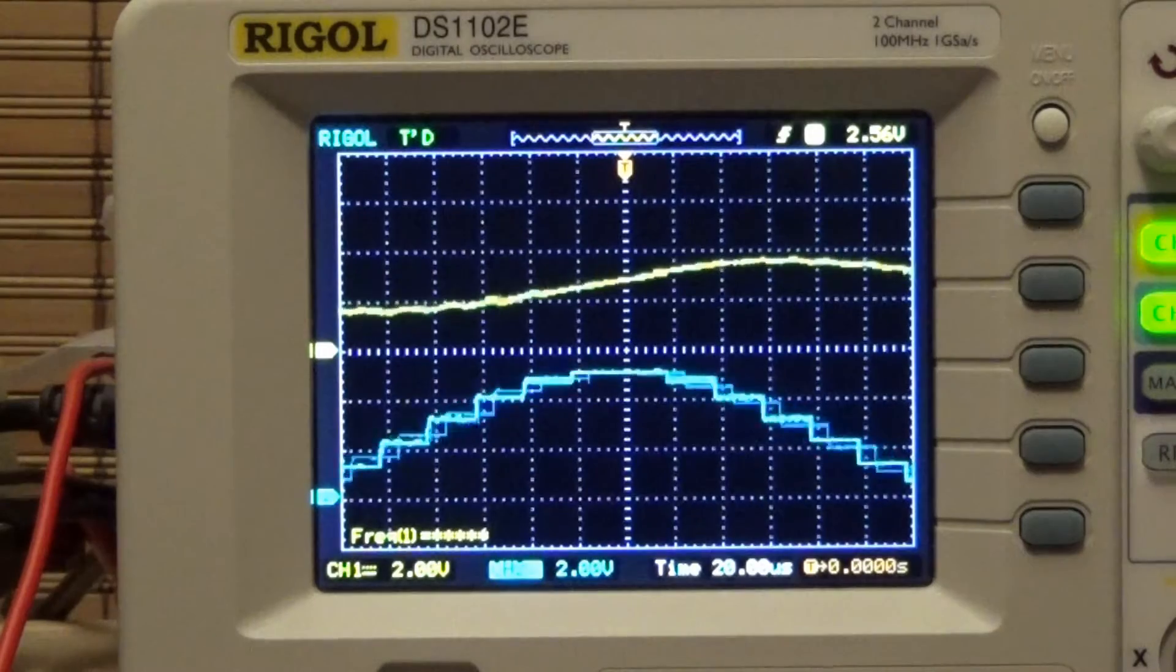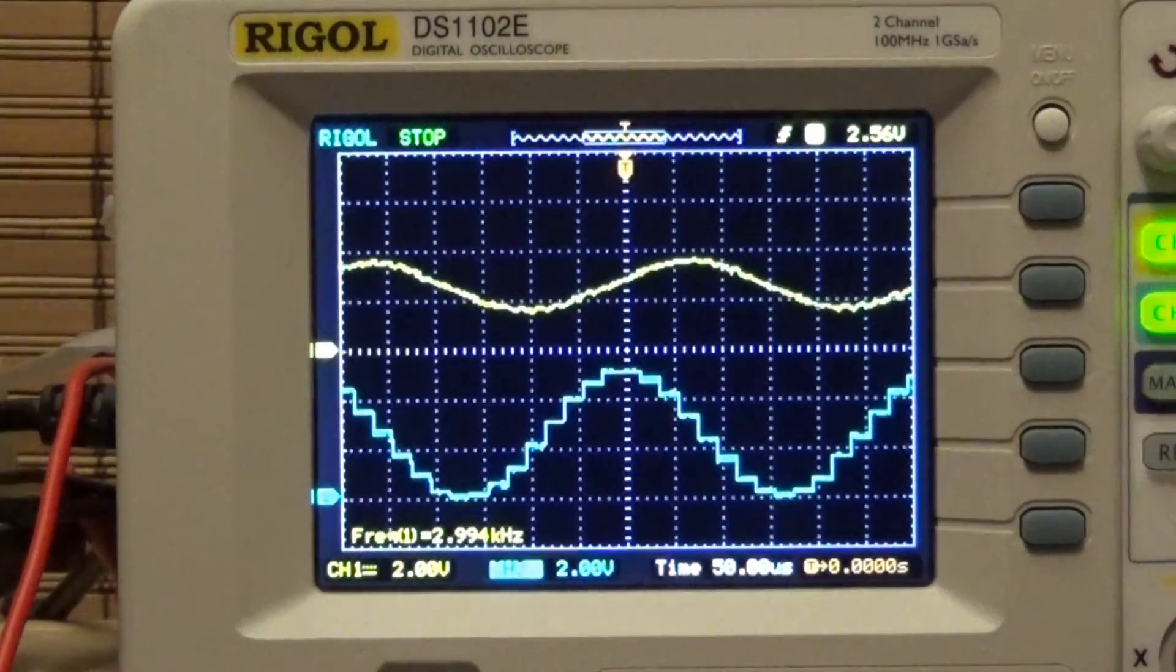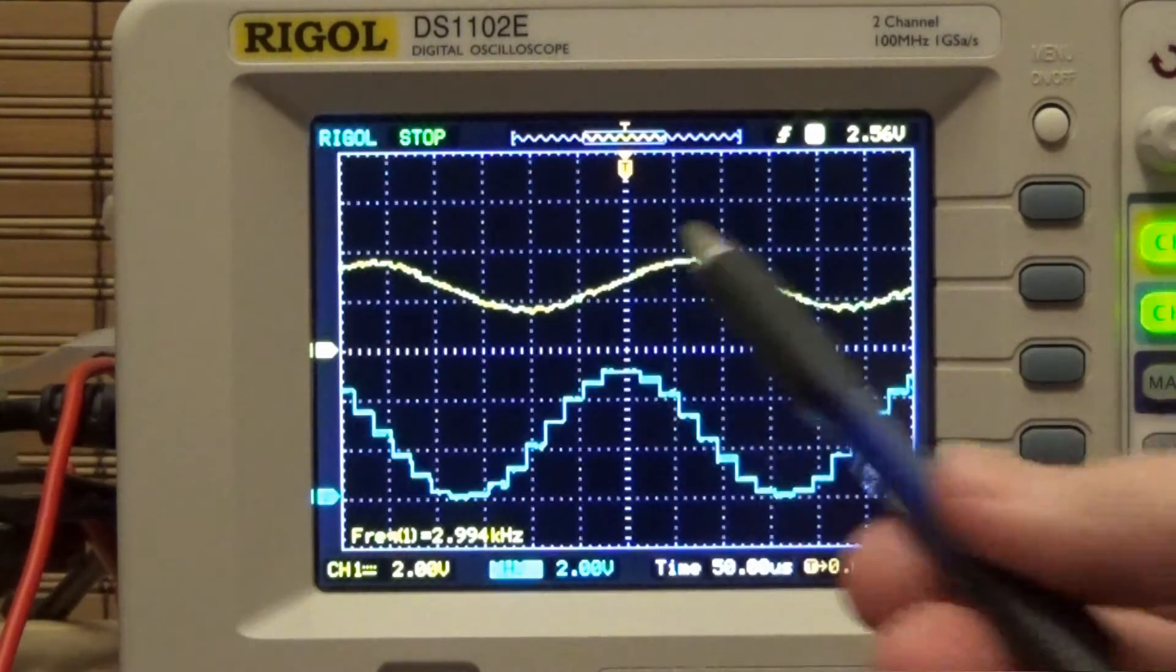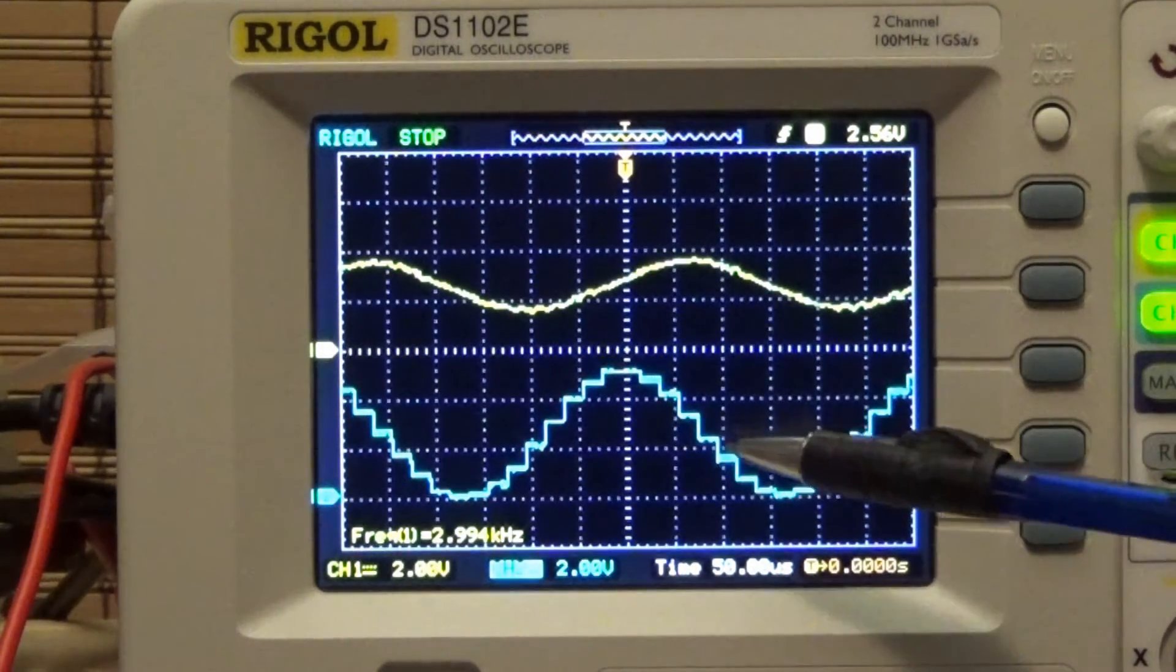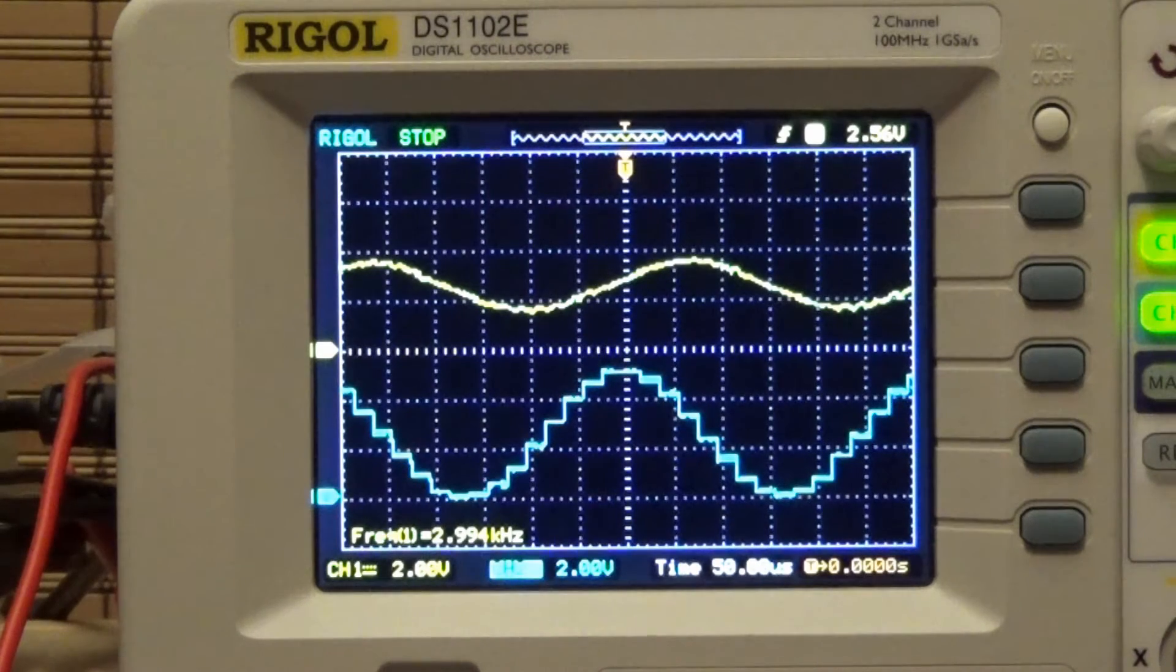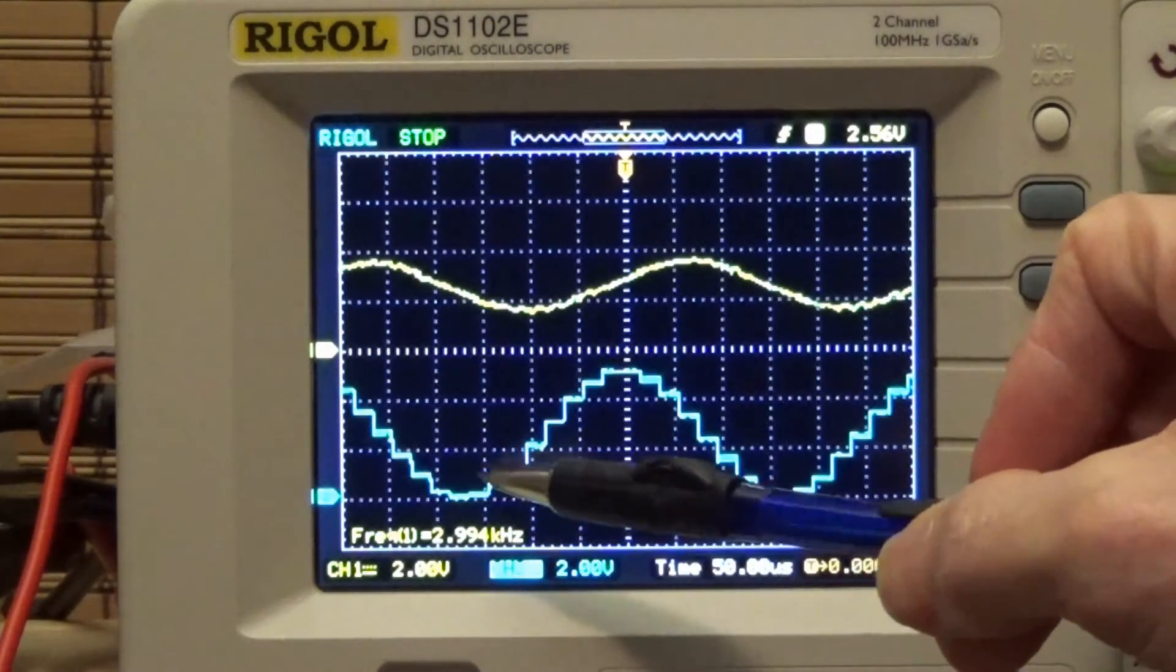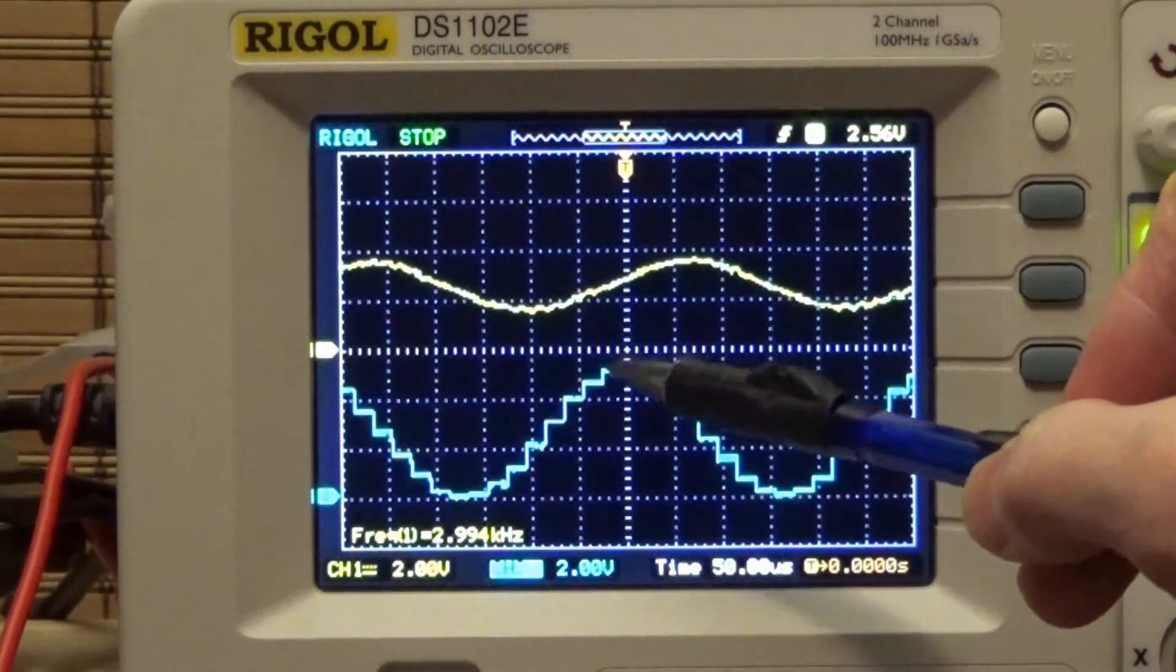Now I'm just going to blow this up a bit and you can have a look at what the signal looks like, the ladder signal looks like. So you can see the steps here, each one of these steps represents a different value that's been taken out of the sine ROM and output to the I.O. port and then the resistor ladder network converts it into an analog voltage that's proportional to that number.